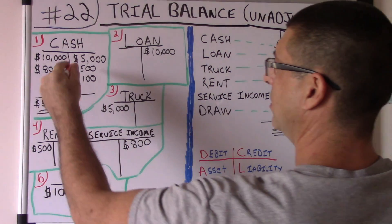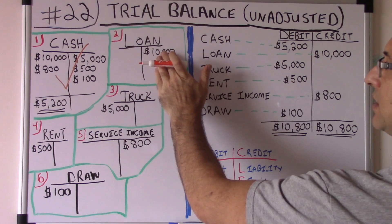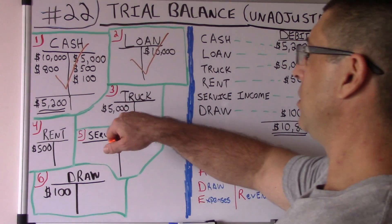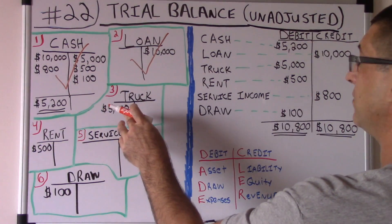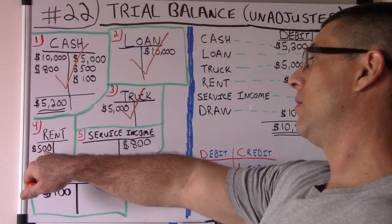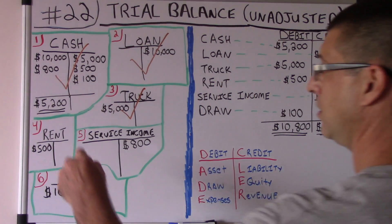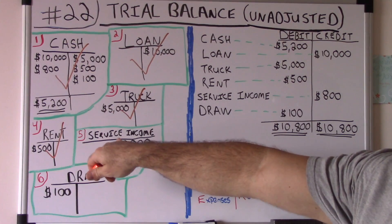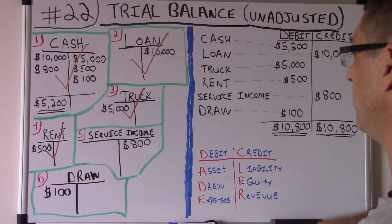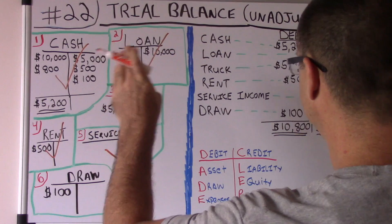Debit on the left, credit on the right — always. Cash debit account $5,200 goes into the trial balance debit column: $5,200. Loan credit balance $10,000 goes into the credit column. Truck debit $5,000 goes into the debit column. Rent debit $500 goes into the debit column. Service income credit $800 goes into the credit column. Draw debit balance $100 goes into the debit column.